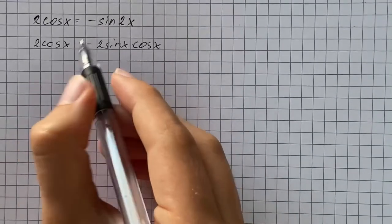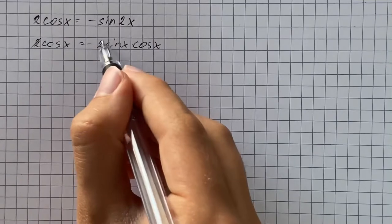Then we're going to get rid of the 2, so we divide both sides by 2.